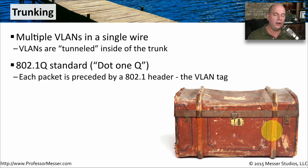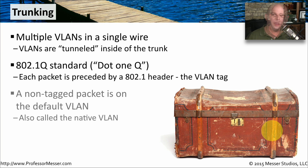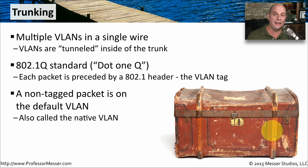Each packet is going to have a header in front of it that we send through the trunk, and on the other end the switch removes that header and places that information into the proper VLAN. Even though we're sending this tagged information between switches, we can also send information between switches that is normal network traffic without any of these 802.1q tags — we call this the native VLAN. Any communication going between switches over the native VLAN will not be subject to any of the tunneling or headers on the .1q trunk.